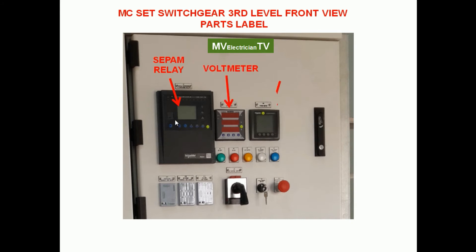This is the voltmeter display — we can check here what the system voltage is. On the other side is the power meter, where we can check the energy consumption, RPM of the transformation in control, the power, and also the power factor. On the voltmeter we can also check the line-to-line voltage and the line-to-neutral voltage.